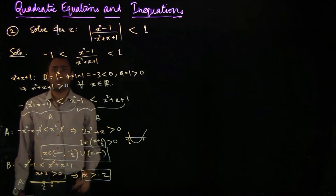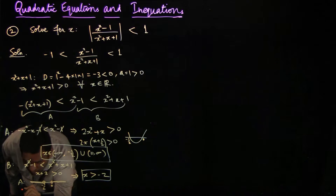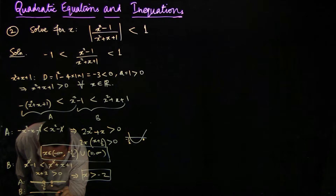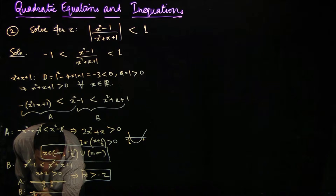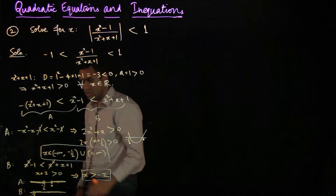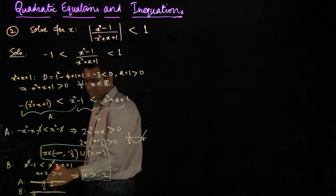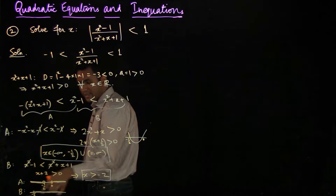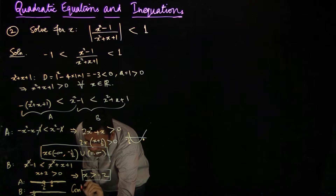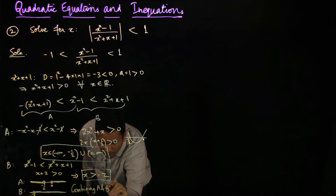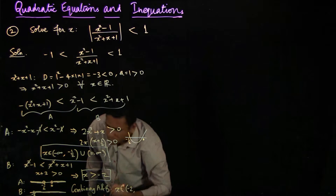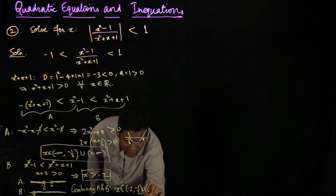The region between minus half and 0 is not included. For inequality B, x should always be greater than minus 2, so we include all numbers greater than minus 2. Looking at the intersection of these two: we cannot take anything less than minus 2, and though B allows anything greater than minus 2, we have the constraint from inequality A. Combining A and B, x belongs to the set of real numbers from minus 2 to minus half, union 0 to infinity. These are the values of x satisfying the original inequality.